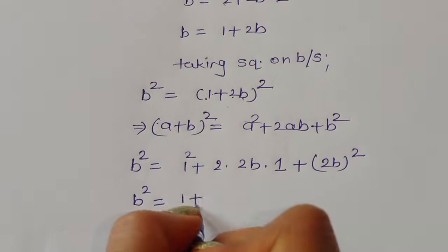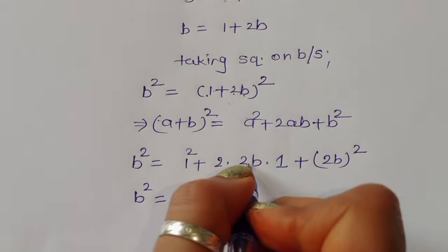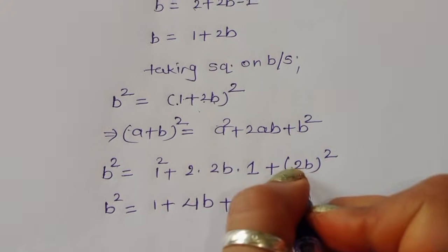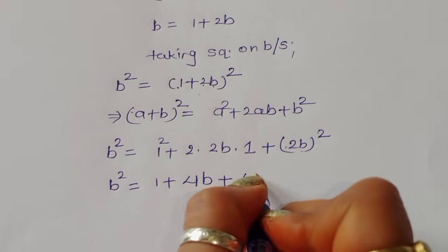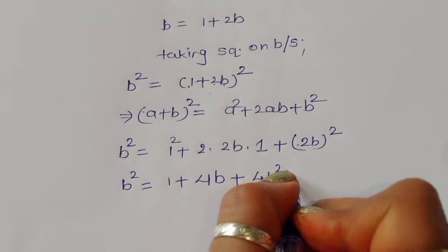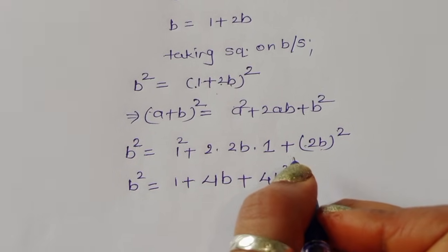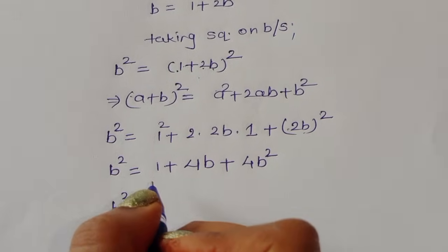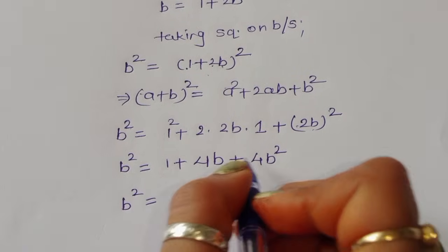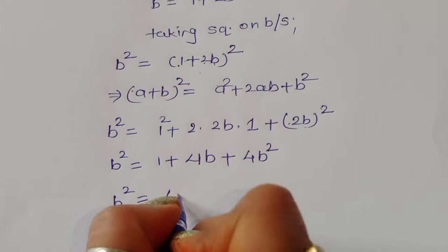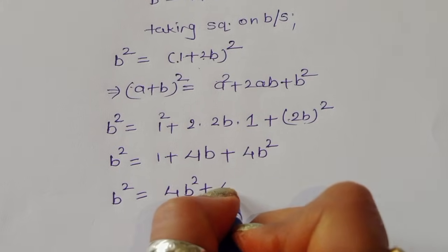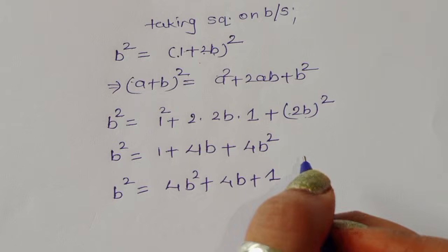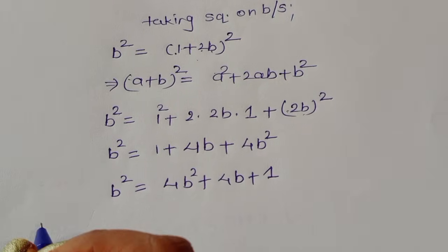So b squared is equal to 1 plus 4b plus 4b squared. We can rewrite this as b squared is equal to 4b squared plus 4b plus 1.